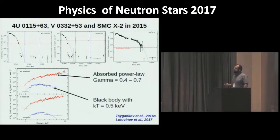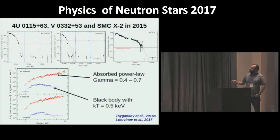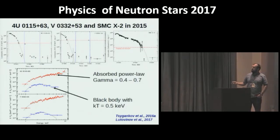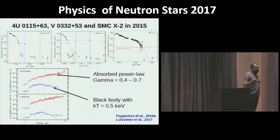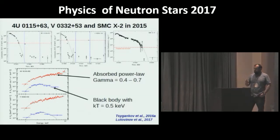This sharp flux drop is exactly what we expected for a transition to the propeller regime. Additional evidence for stopped accretion comes from spectral analysis: spectra just before the transition are quite hard and can be approximated by a power law, typical for accreting X-ray pulsars. Immediately after the transition, the spectrum changes completely to a soft blackbody with a temperature of about 0.5 keV — exactly what is expected if accretion is stopped and we see a cooling neutron star.